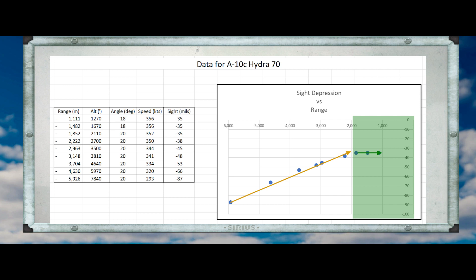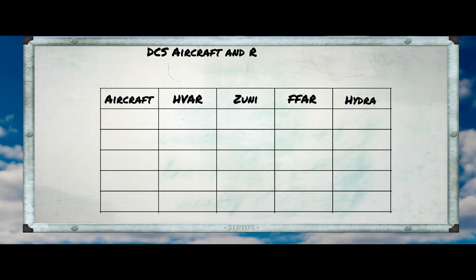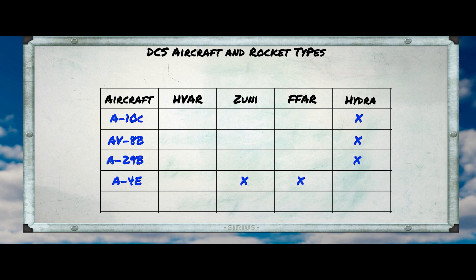Okay, so that's the principle involved. What should we do next? Well, I think we should go out and build a site depression table for a more challenging case — one where we don't have a CCIP pipper. So let's take a look at the choices we have. This isn't a comprehensive list by any means, but it basically is the list of rocket-carrying aircraft in DCS that I own.